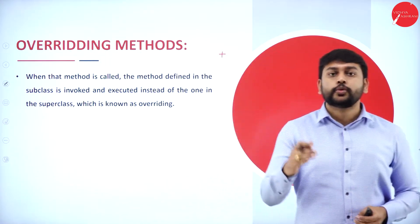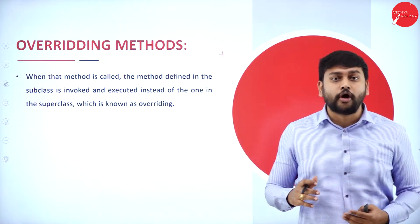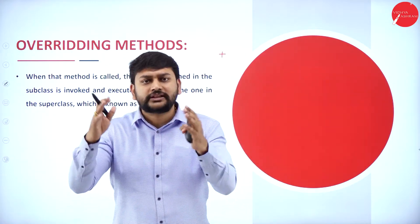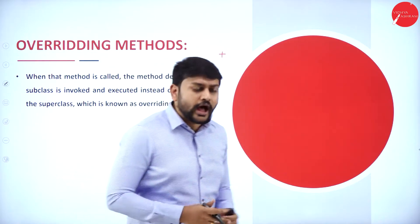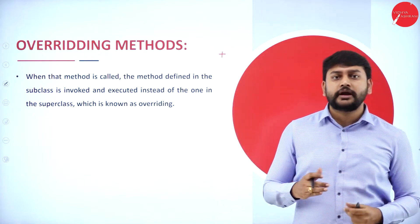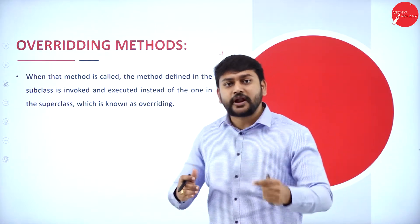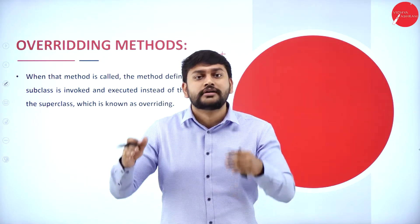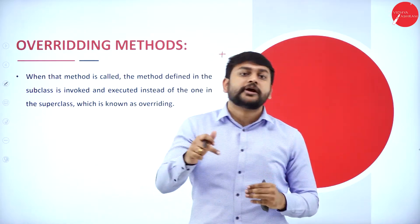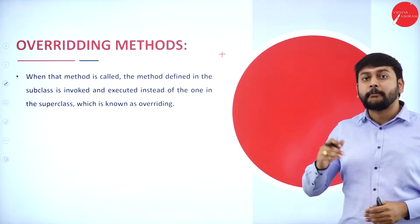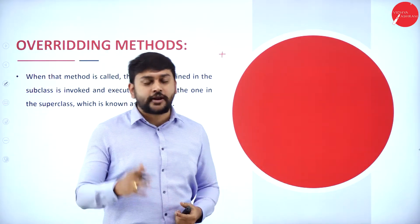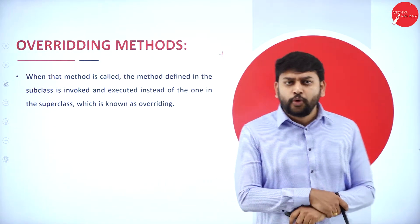The same case will happen with methods when it comes to superclass and subclass. I have already defined a method — say the method name is 'display' — in the superclass. When I implement the subclass, I will also have a method called 'display', but I will change the functionality from what it had in the superclass. That is what we call method overriding.